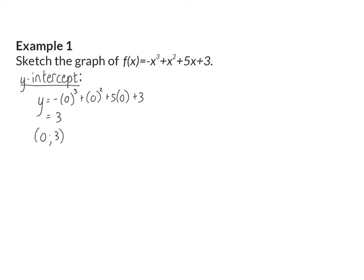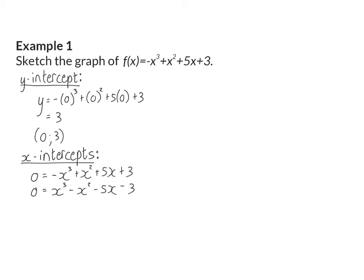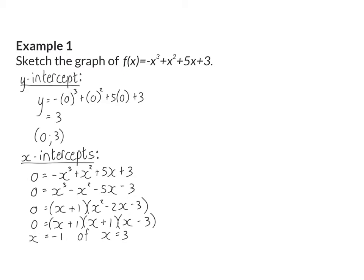Next we can determine the x-intercept, and for this we change the y-value to zero and factorize. If you need to remind yourself how to factorize this equation, have a look at lesson two again on factorizing cubic polynomials. So now we have our x-intercepts at (-1, 0) and (3, 0).